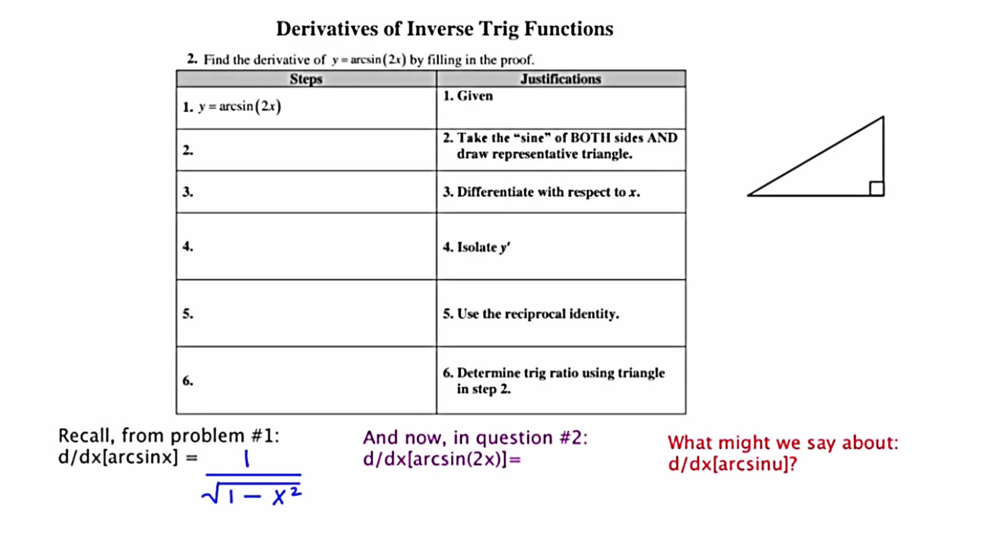Starting with the given, y equals arcsine 2x. In step two, we're told to take the sine of both sides and then draw a representative triangle. Taking the sine of the left side, we get sine y. In taking the sine of the right side, we get the sine of the arcsine of 2x, which is simply just 2x. We talked about why that is on the other slide.